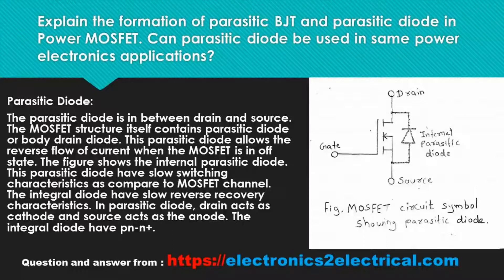Explain the formation of parasitic BJT and parasitic diode in power MOSFET. Can the parasitic diode be used in power electronics applications?